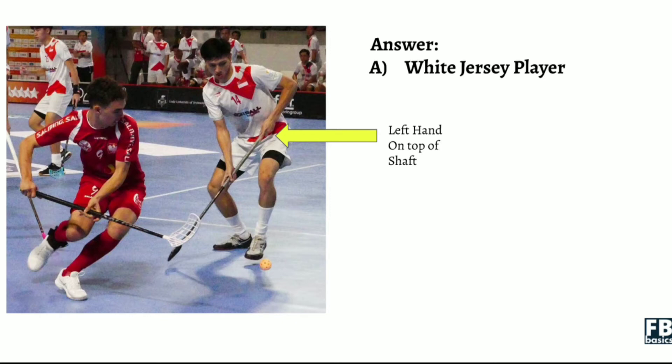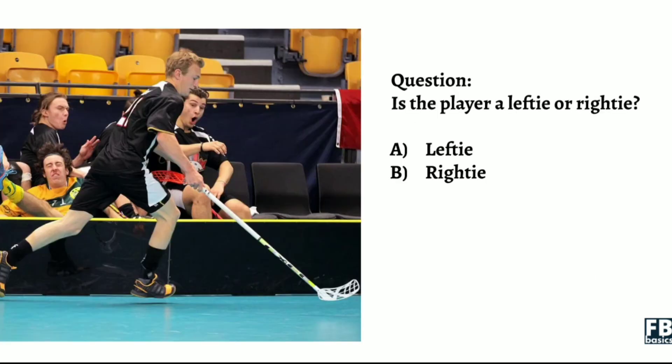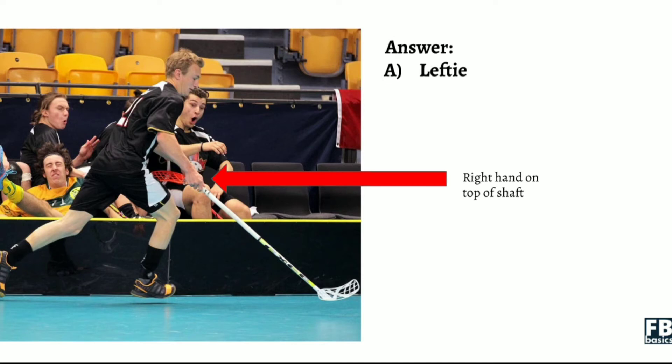Next question. Is the player in the picture — the main player, the black jersey player — a lefty or righty? The answer is he's a lefty. Why? Because his right hand, if you are able to spot it, his right hand is on top of the shaft. And therefore, he's a lefty.